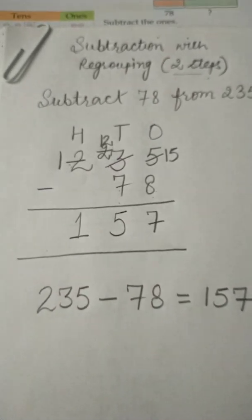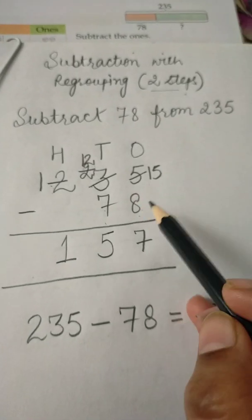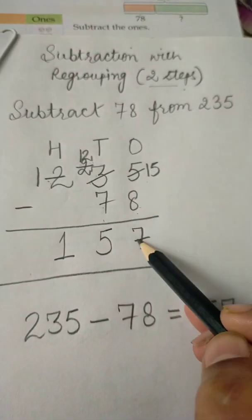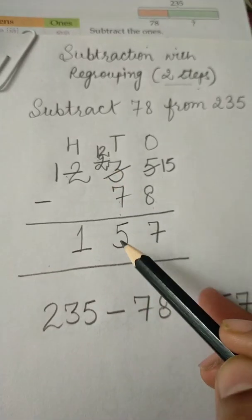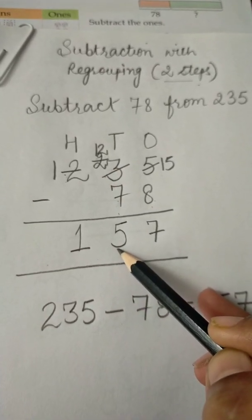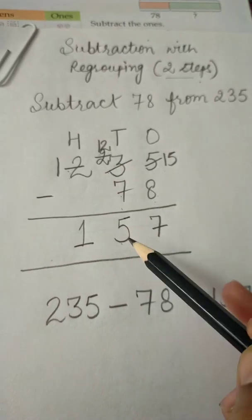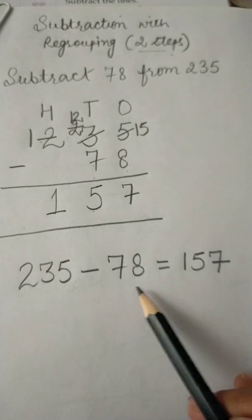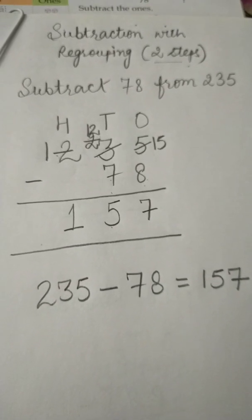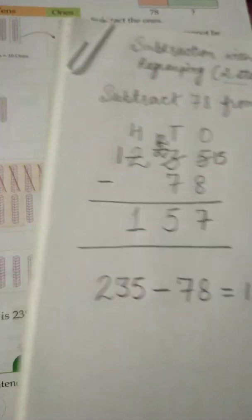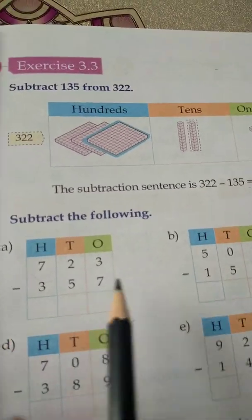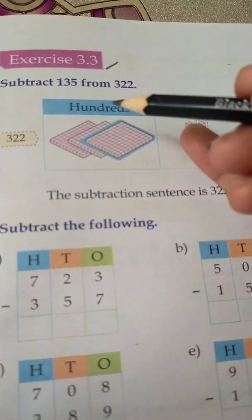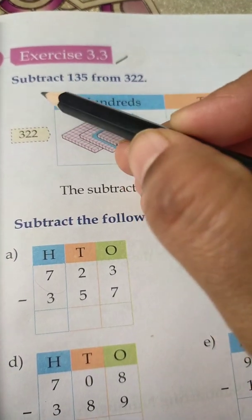This is called subtraction with regrouping two steps. At the first step we did the regrouping, and at the second step we did the regrouping again — that is why it is called subtraction with two steps of regrouping. Now with this concept we will do the sums of exercise 3.3.